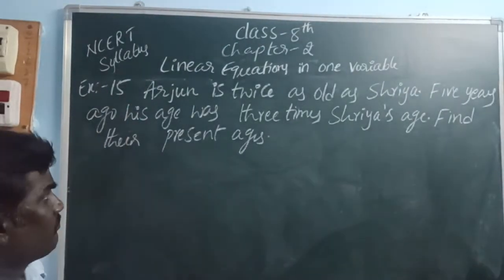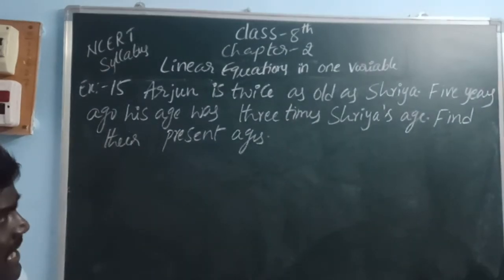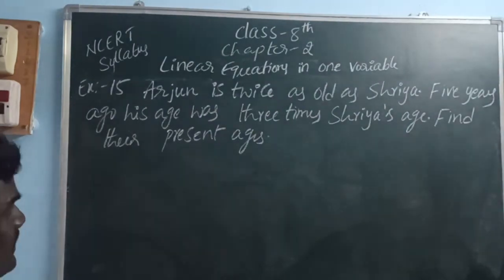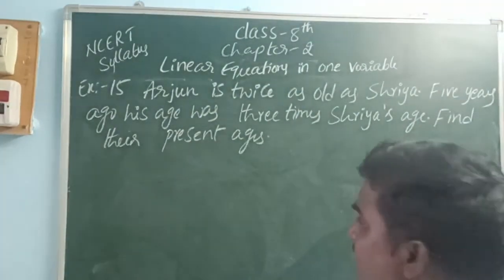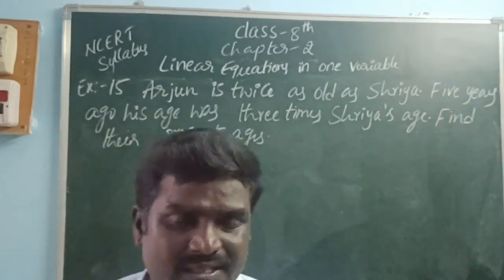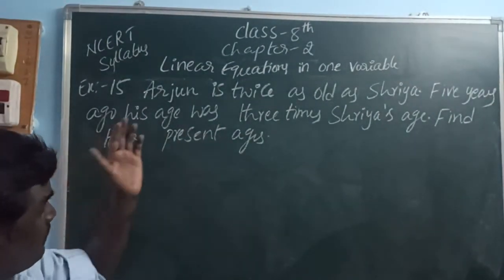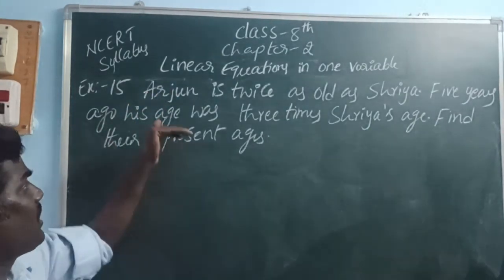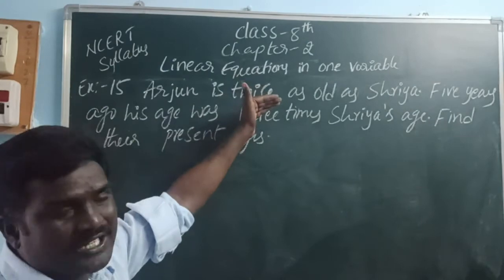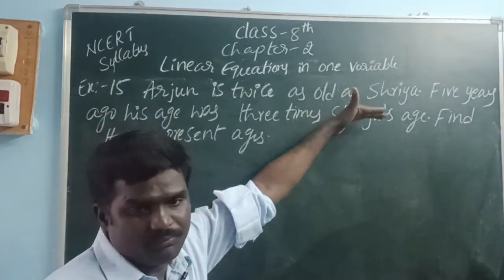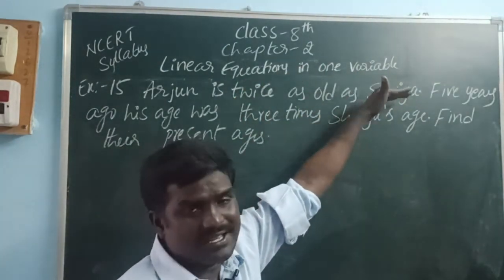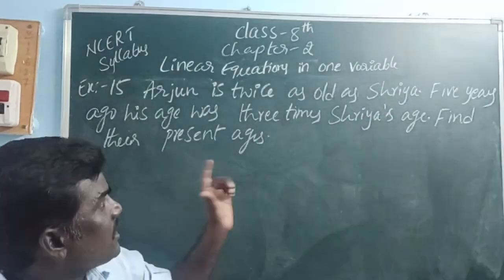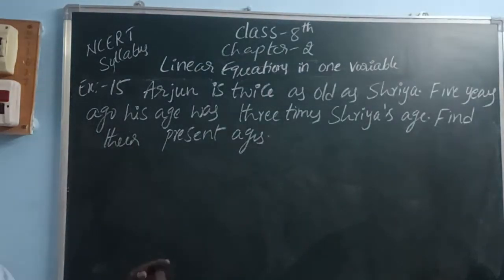Example 15: Arjun is twice as old as Sriya. Five years ago, his age was 3 times Sriya's age. Find their present ages. Let Sriya's present age be x. Then Arjun's present age is 2x.